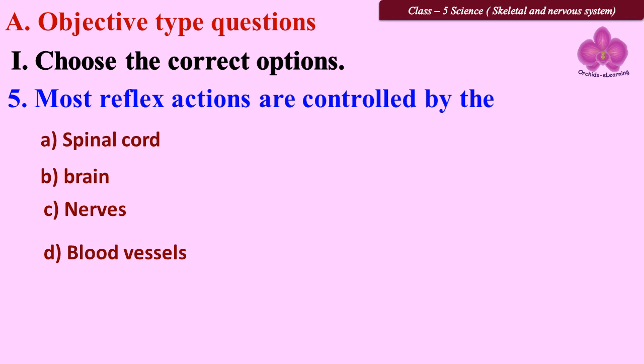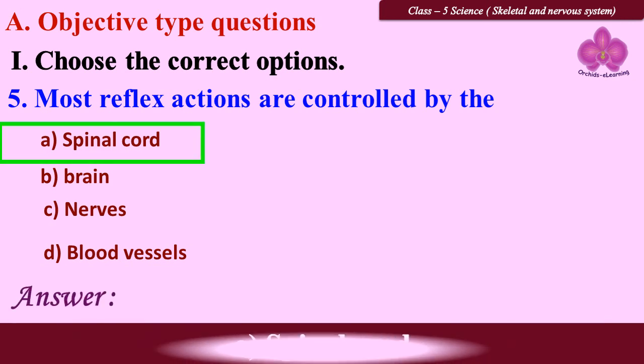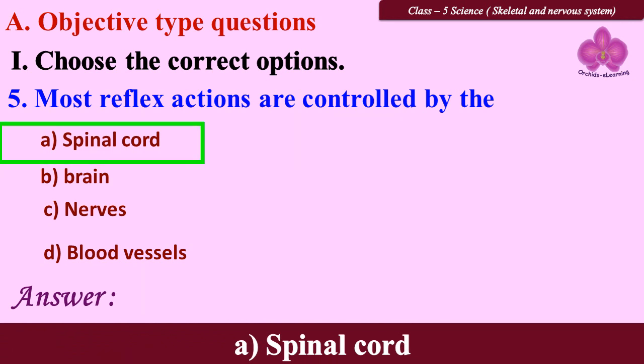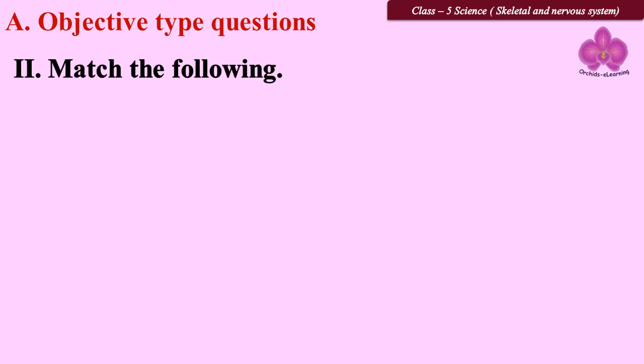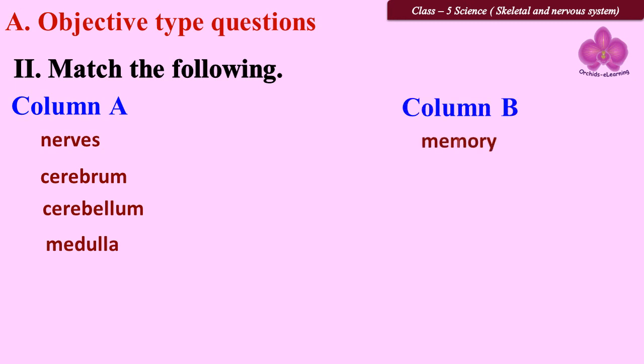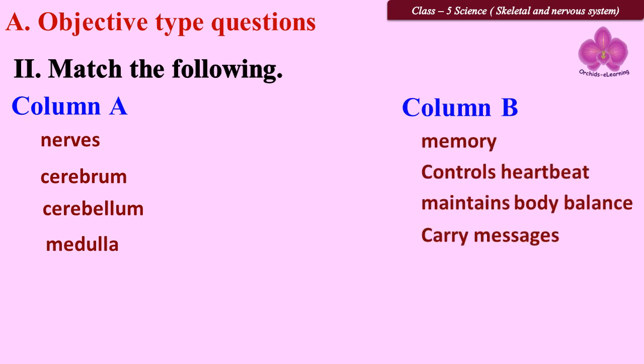Match the following. Look at the options given in column A and column B. Think about your answer. Matchings are: nerves carry messages, cerebrum memory, cerebellum maintains body balance, and medulla controls heartbeat.